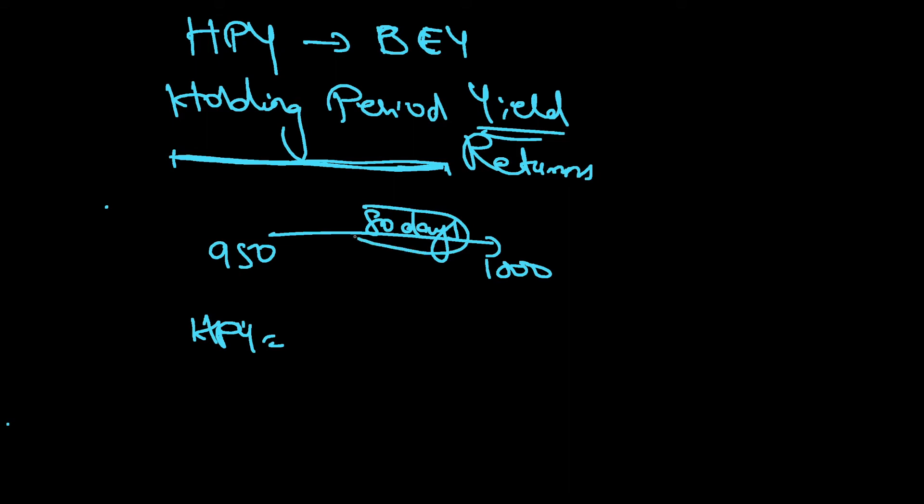For holding period yield, whatever period you are holding, you are not worried about what period. All you are worried about is the return for this 80 days. So the return will be $50 - you are getting $50. How do I get that? $1000 minus $950, so $50 divided by the cost you have invested, $950, into 100.